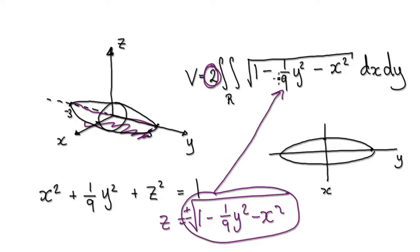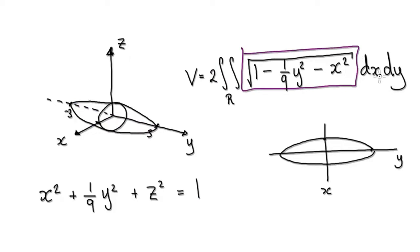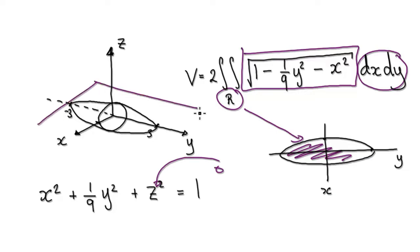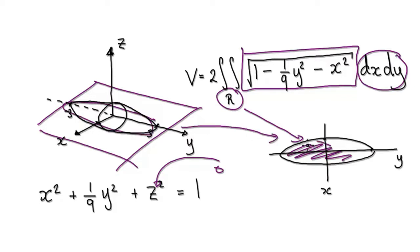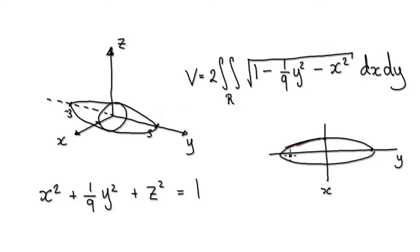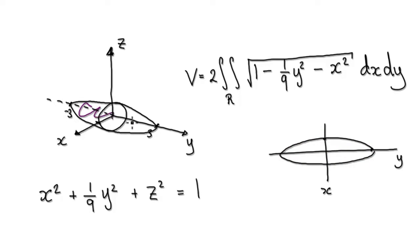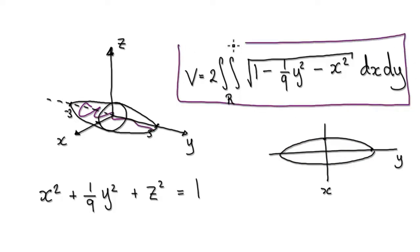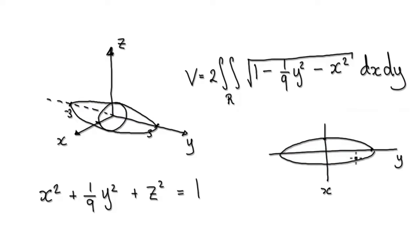This is our surface, and the region we're integrating over is this ellipse here. If you put zero into z, you get a horizontal sheet of paper, and you get an ellipse like this. So we're integrating over this elliptical region, and working out the volume means evaluating this double integral over that region.